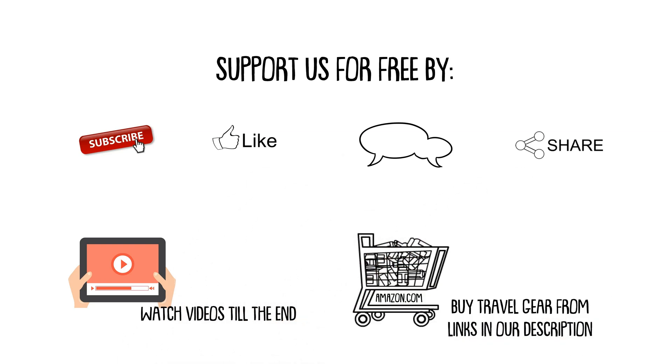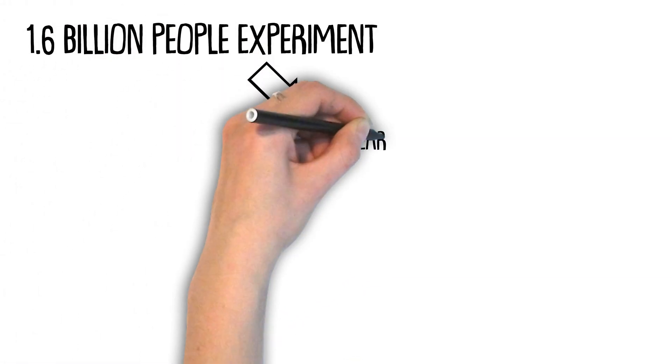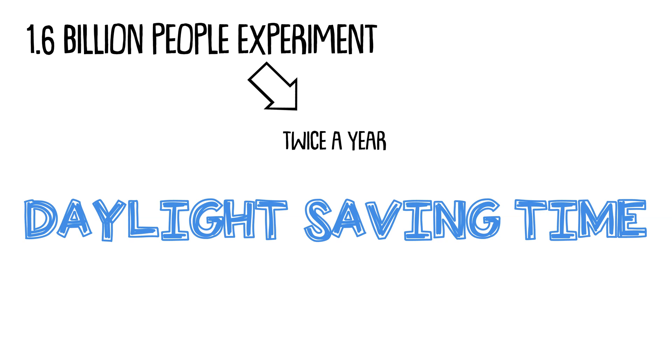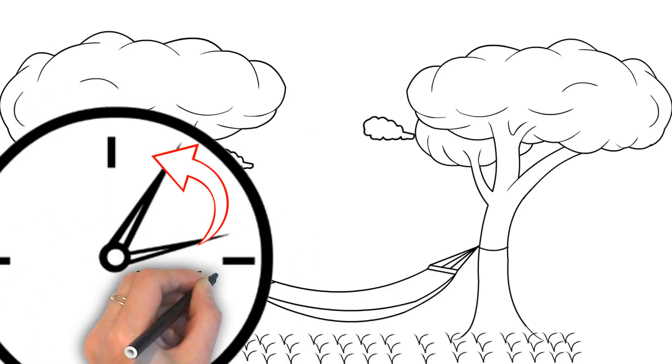A global experiment is performed on 1.6 billion people twice a year, and it's called Daylight Saving Time. We know that in spring, when we lose one hour of sleep, we see a subsequent 24% increase in heart attacks the following day.